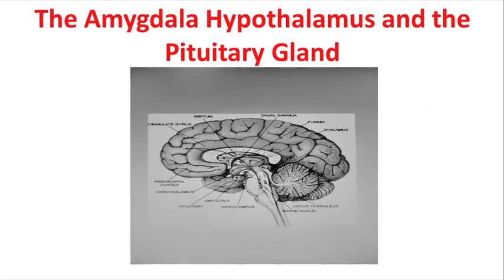Looking in more detail, we can see the amygdala, the pituitary gland located below it, and the hypothalamus. We can also see several limbic structures: the hippocampus, the raphe nuclei, and the basal ganglia — these are some of the primary limbic structures visible here.